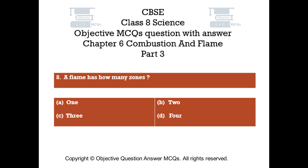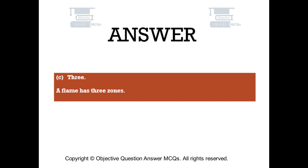Question number 8. A flame has how many zones? Option A 1, Option B 2, Option C 3, Option D 4. The right answer is Option C — 3. A flame has 3 zones.